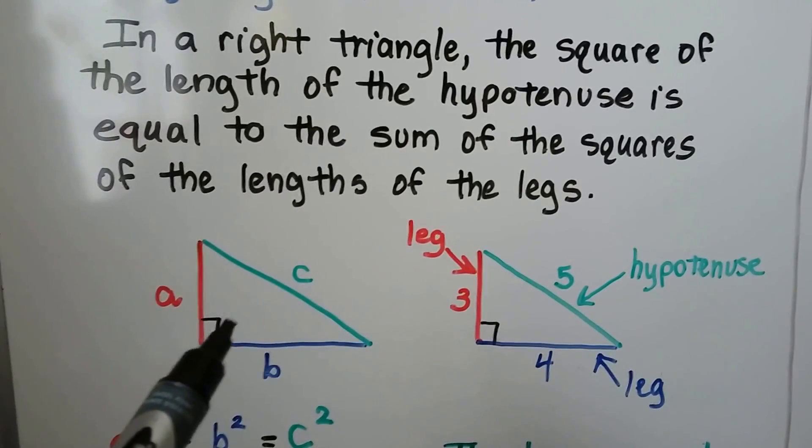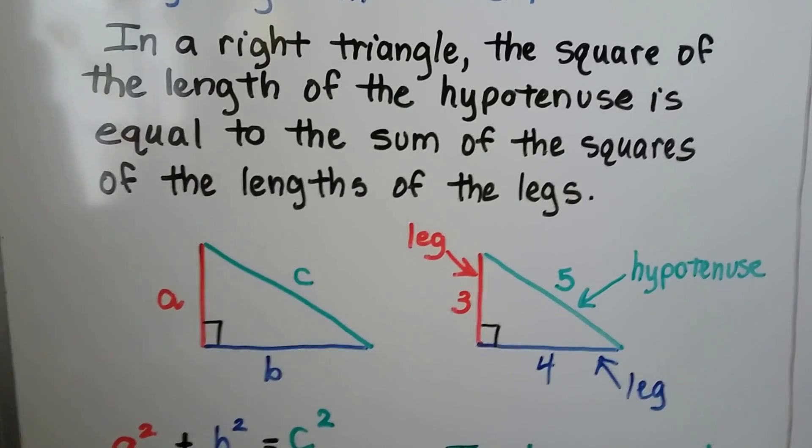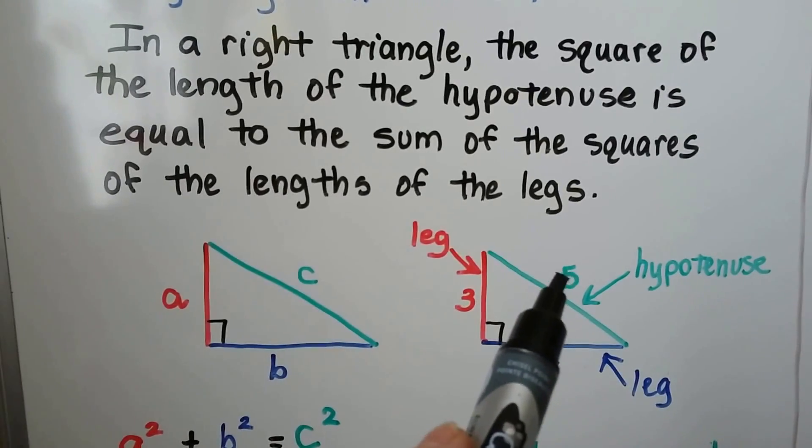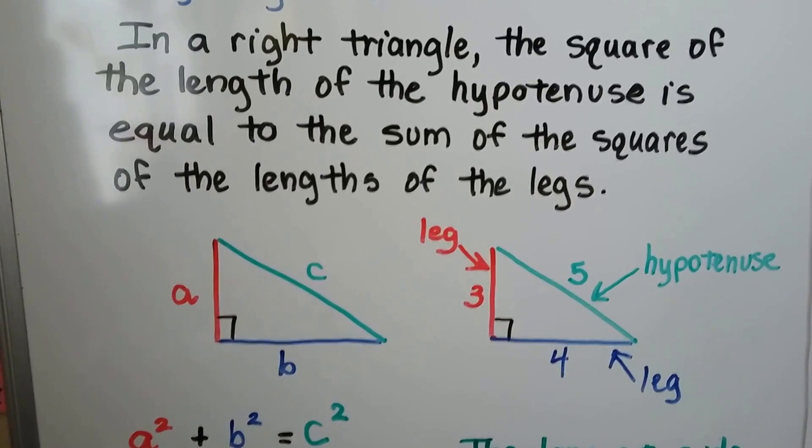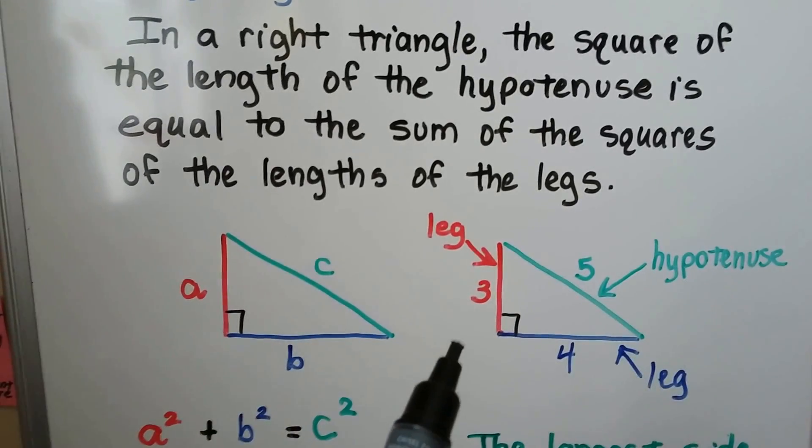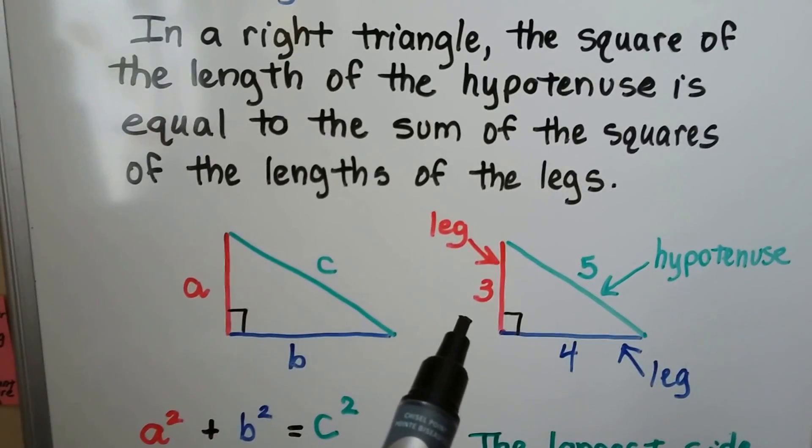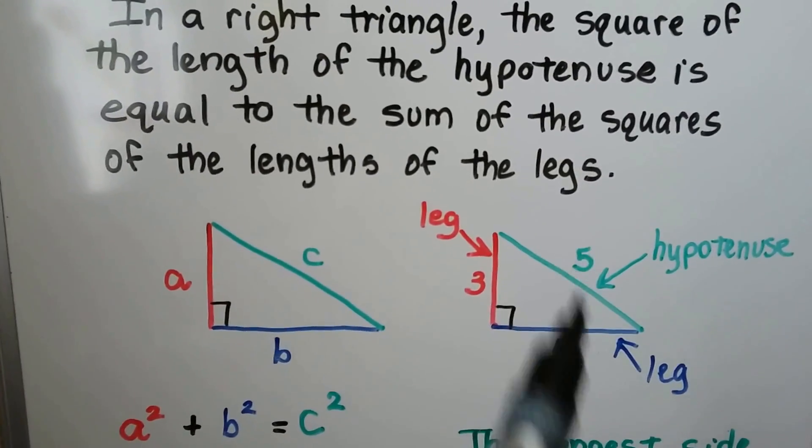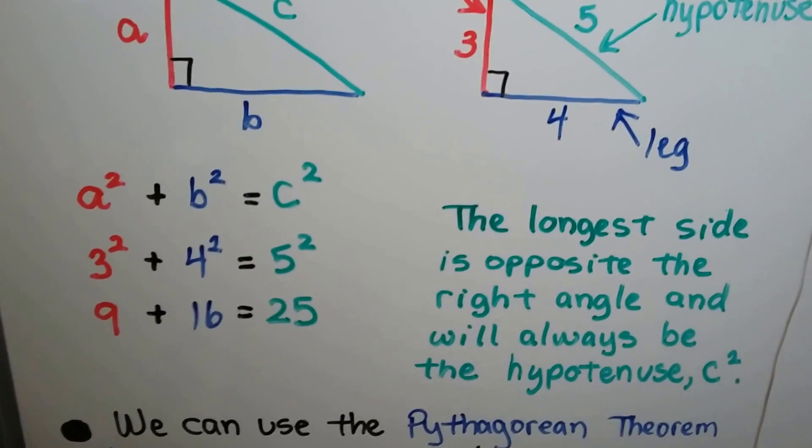And it's saying in a right triangle, see how we have our box? We know it's a right triangle. It's saying the square of this hypotenuse, so if we did 5 squared, it would equal the sum of the squares of the lengths of the legs. So if we did 3 squared plus 4 squared, it would equal 5 squared.